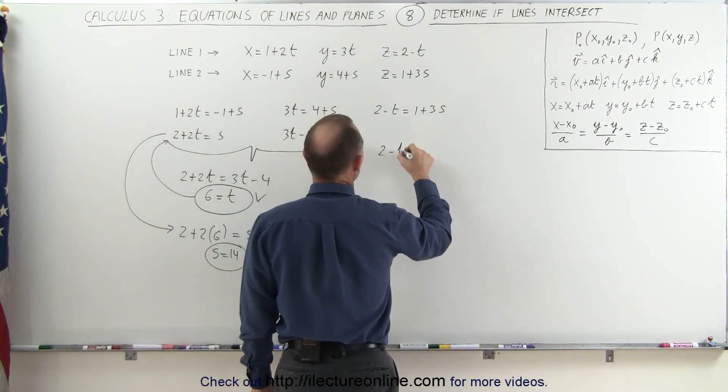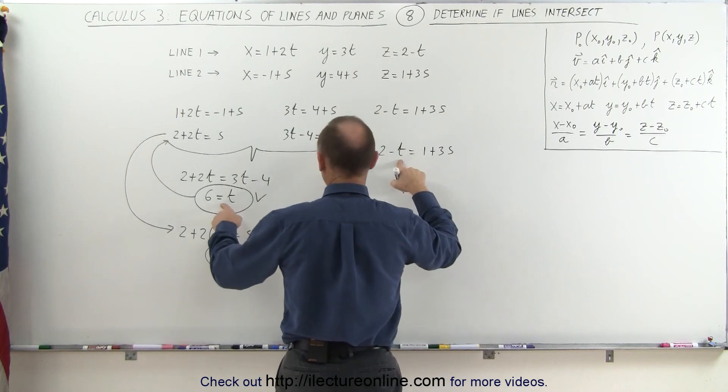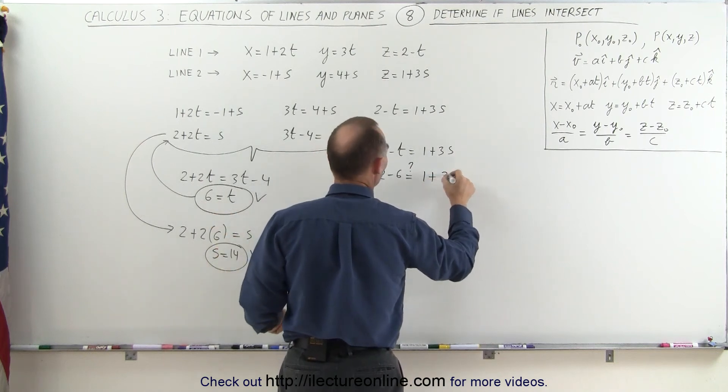I take 2 minus t is equal to 1 plus 3s. For t I plug in 6, 2 minus 6 is equal to question mark, 1 plus 3 times 14.